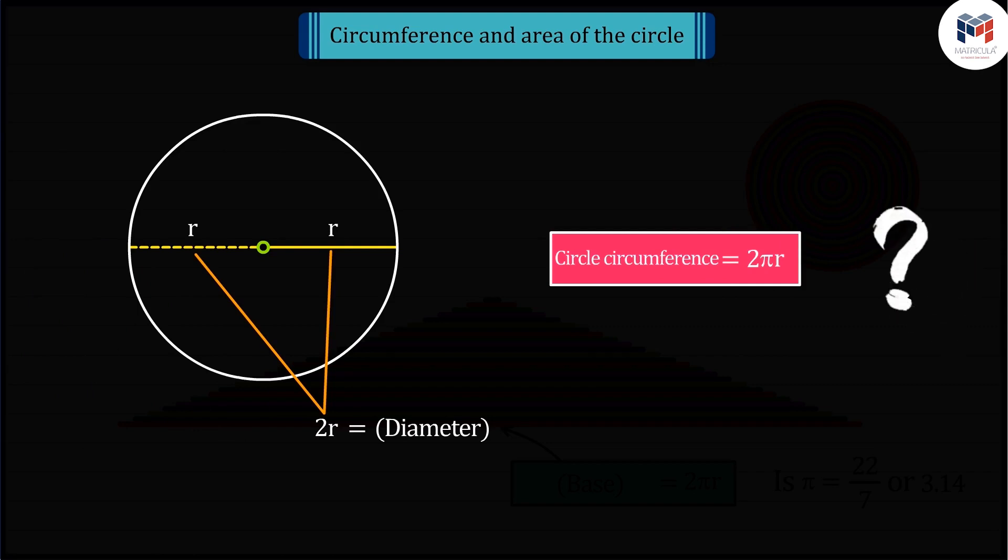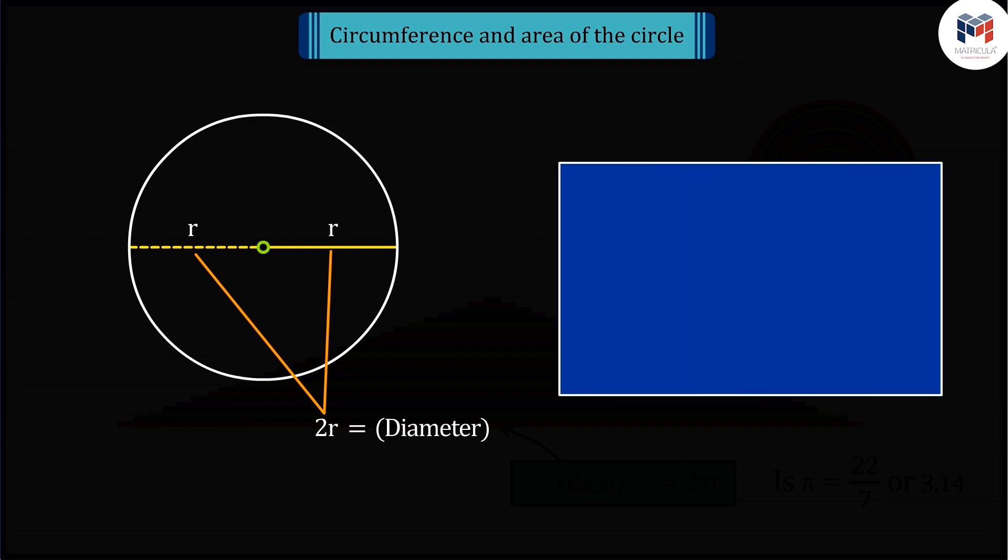Absolutely correct. Since we know that the circumference of a circle and its diameter has a constant ratio, which is represented by pi, and by solving it, we get the circumference of the circle.